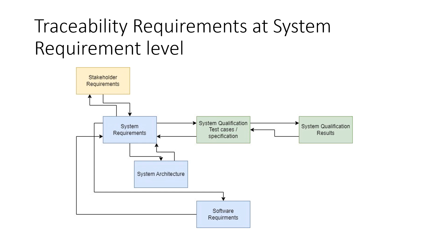There should be a unique identification number for stakeholder requirements, system requirements, system architecture — everything should have a unique identification number in order to identify that particular unit by name. For example, if you have three or four items with the same name, you cannot call a particular one. The same way, you need a unique identification number to establish traceability.